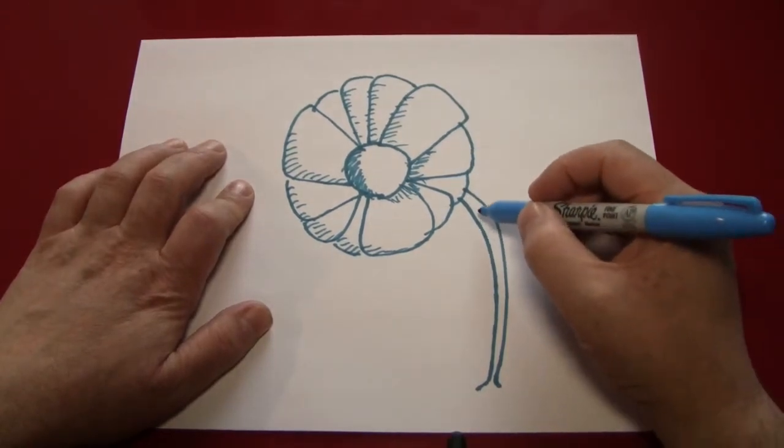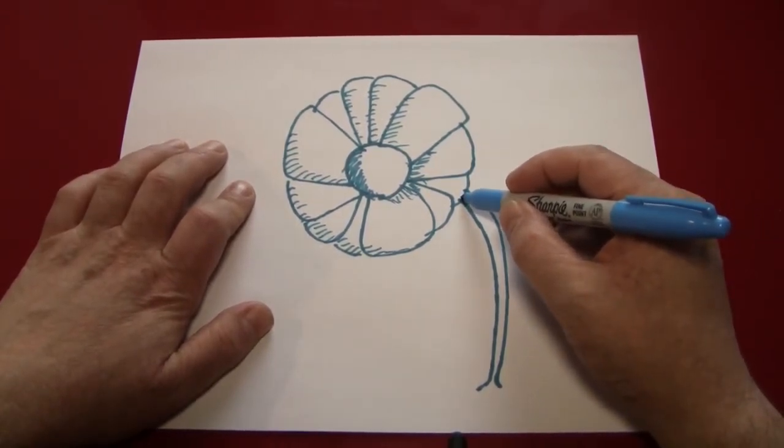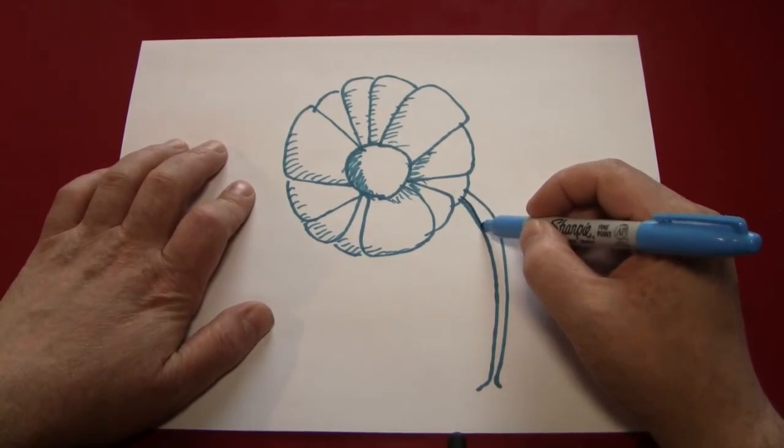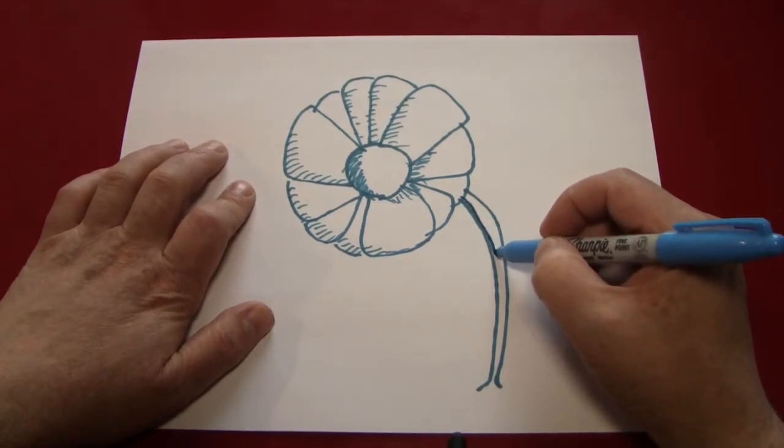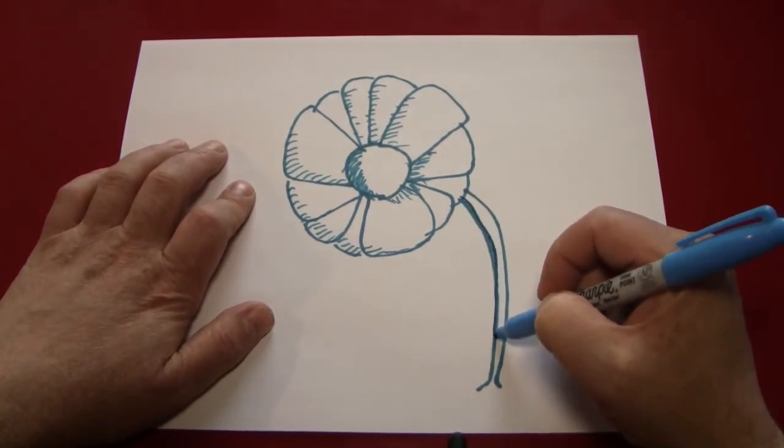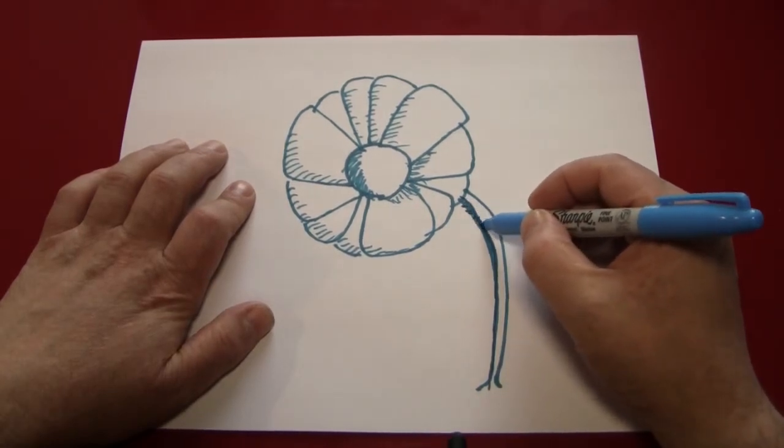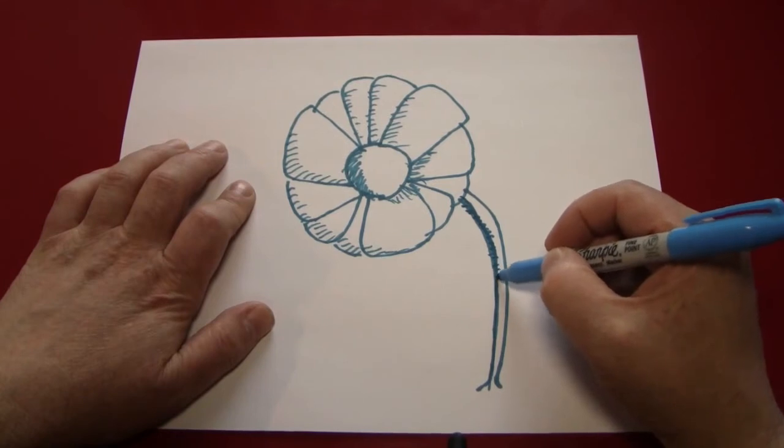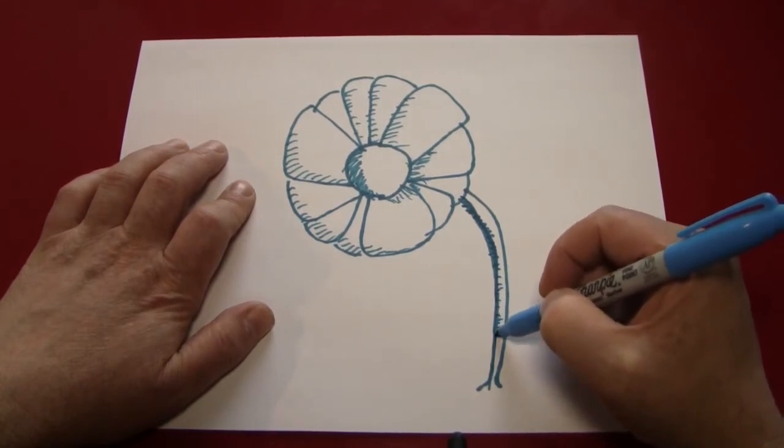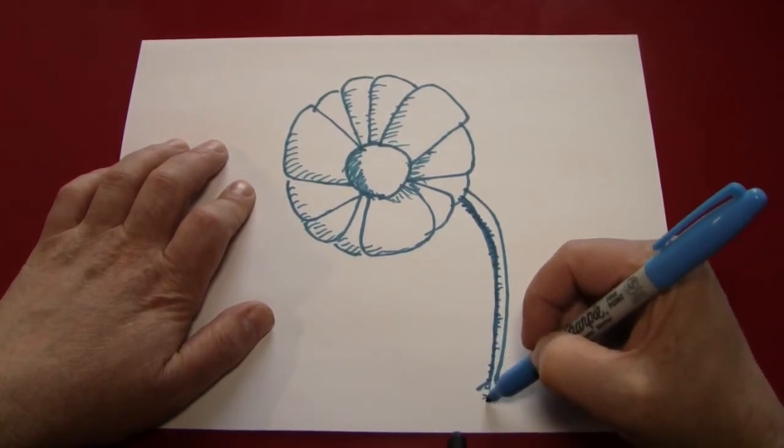Next we're going to put a little bit of detail on the stem. If you want to infer a shadow here, you can just make a second line on the left side, or even make little hash marks. You'll find what works best for you.